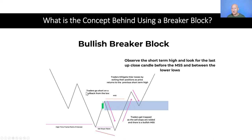Now, opposite to what was happening in our bearish example, in this example as we get the pullback from this swing low, we get traders trying to go short — they're obviously trying to take advantage of this trending market. And then the market pushes lower again and these sell stops get taken, which creates a reaction.